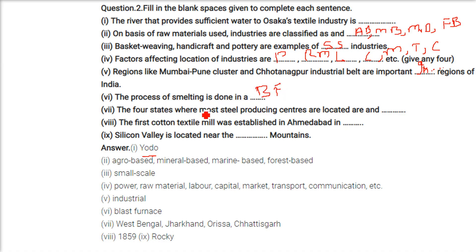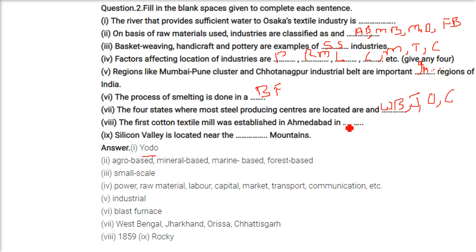The process of smelting is done in a blast furnace. The four states where most steel producing centres are located include West Bengal. The first cotton textile mill was established in Ahmedabad in 1859. Silicon Valley is located near the Rocky Mountains.